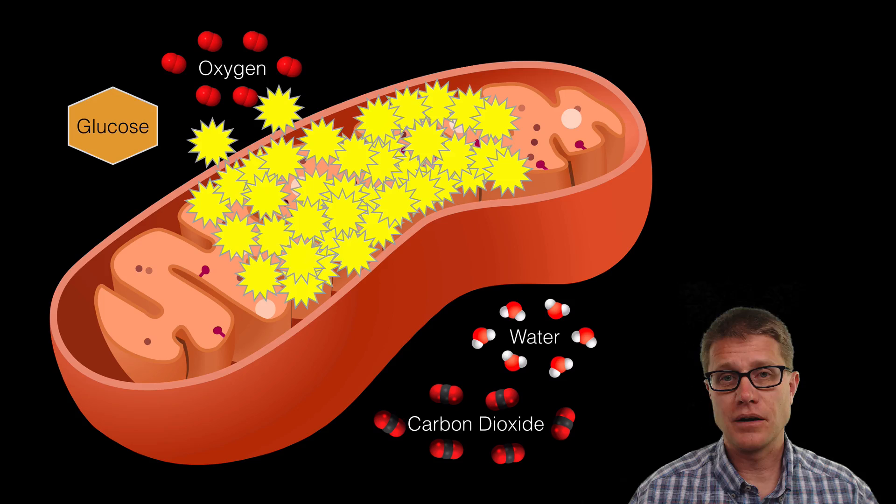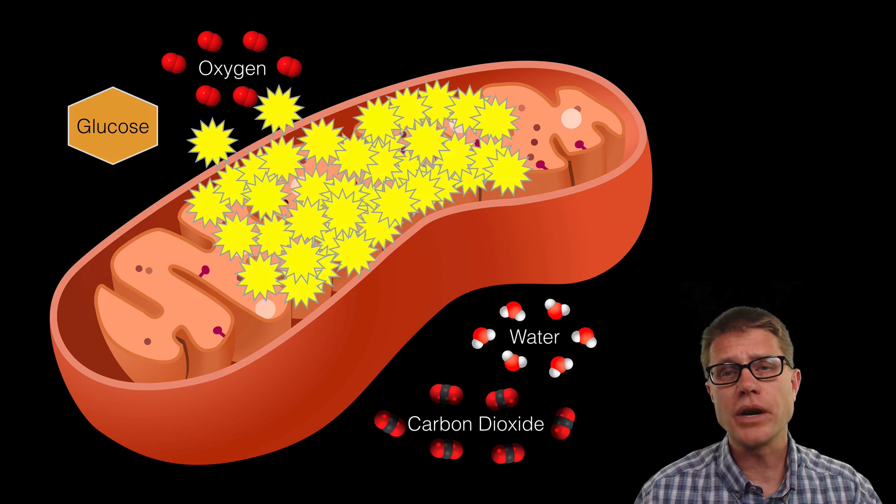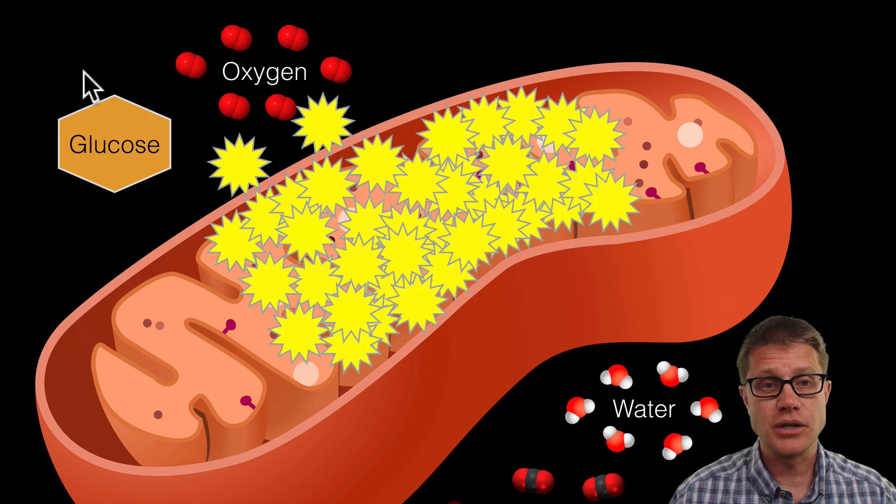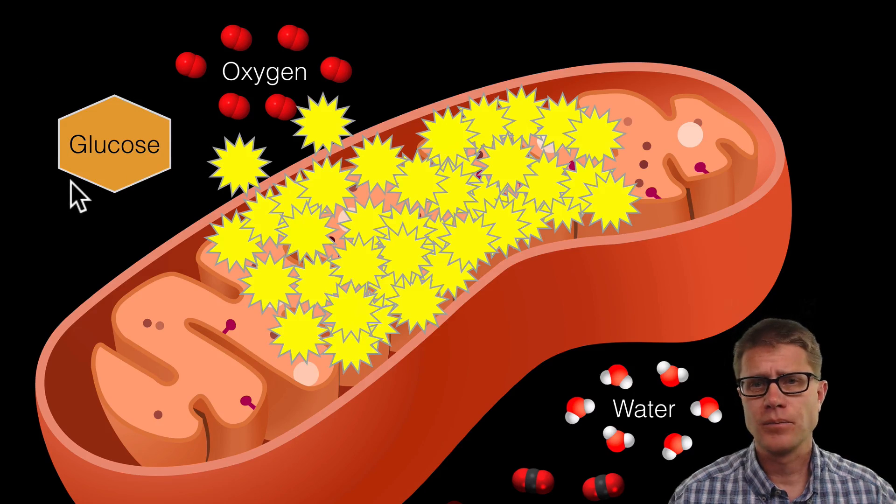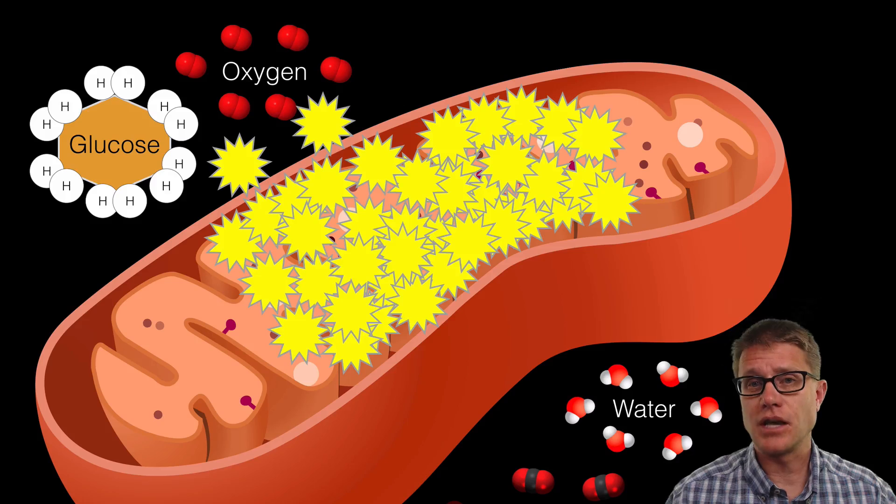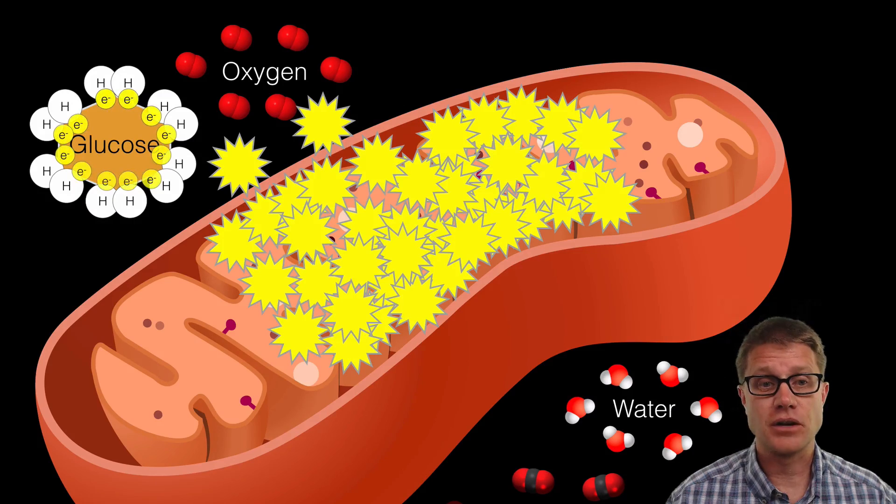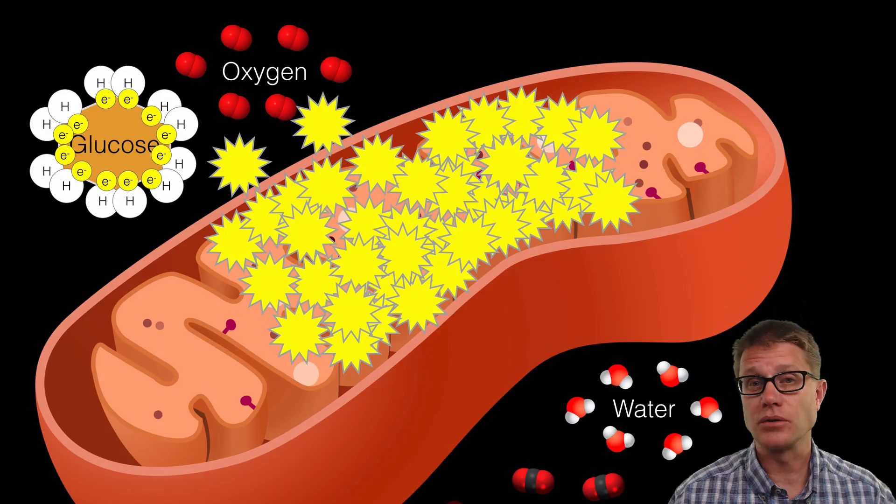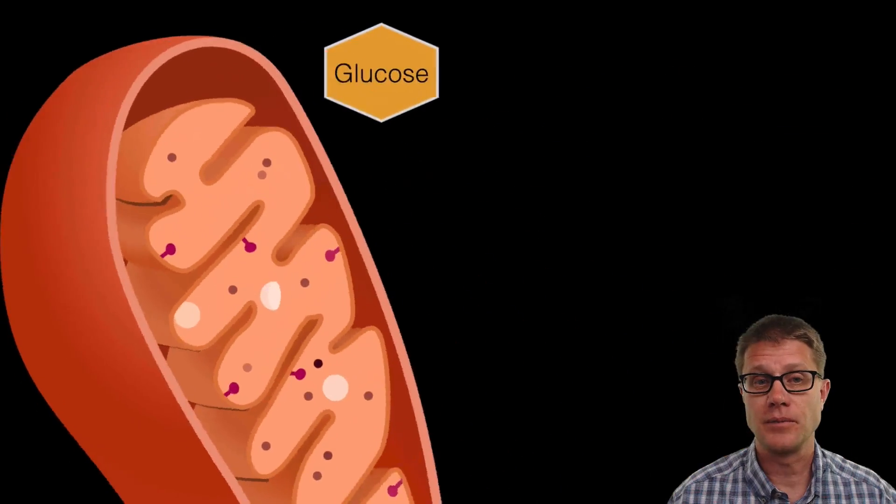Now energy just does not come from nowhere. It is neither created nor destroyed. So where was it before it was in the ATP? Well the energy was in the nutrient. It is in the glucose itself. More specifically, it is in the bonds between the hydrogen and the carbon in the glucose. So those are high energy bonds. And so there are going to be high energy electrons between the hydrogen and the carbon. And we can use those and we will use those later in this video.